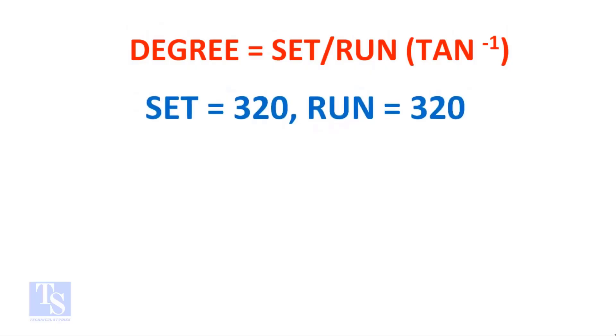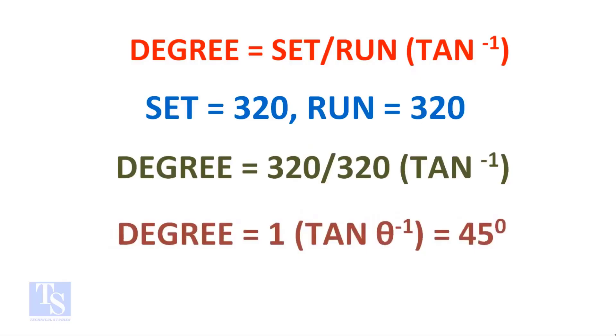In this case, set equals 320 mm and run equals 320 mm. So, degree equals 320 divided by 320 is equal to 1. Shift tan 1 equals 45 degrees.